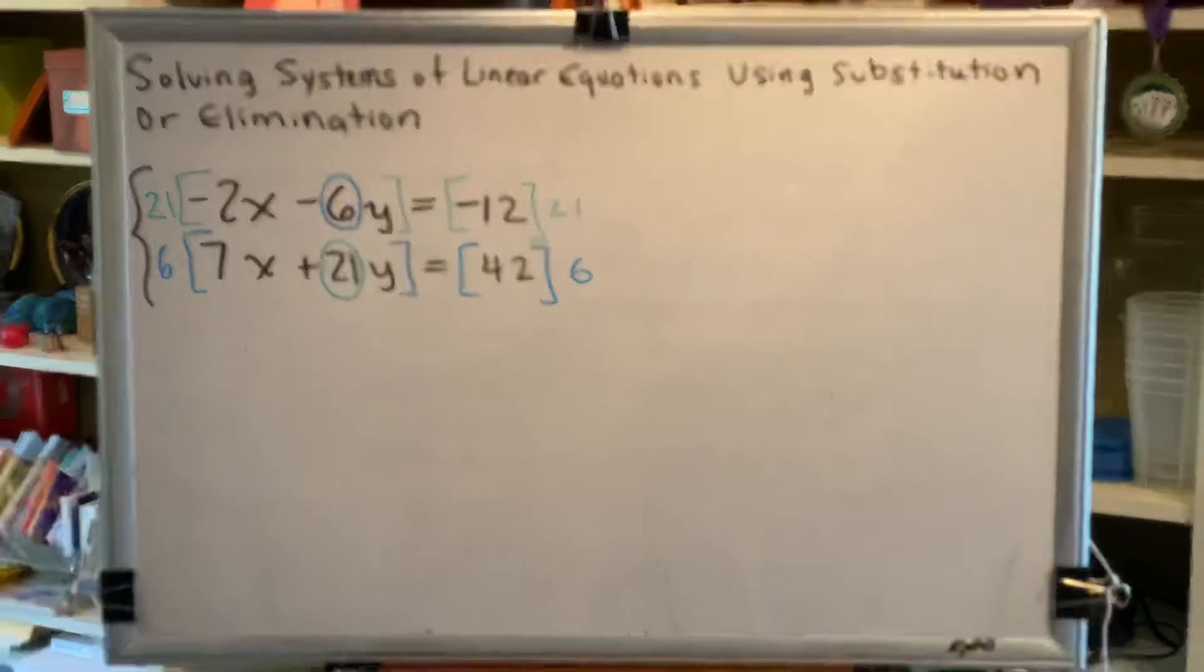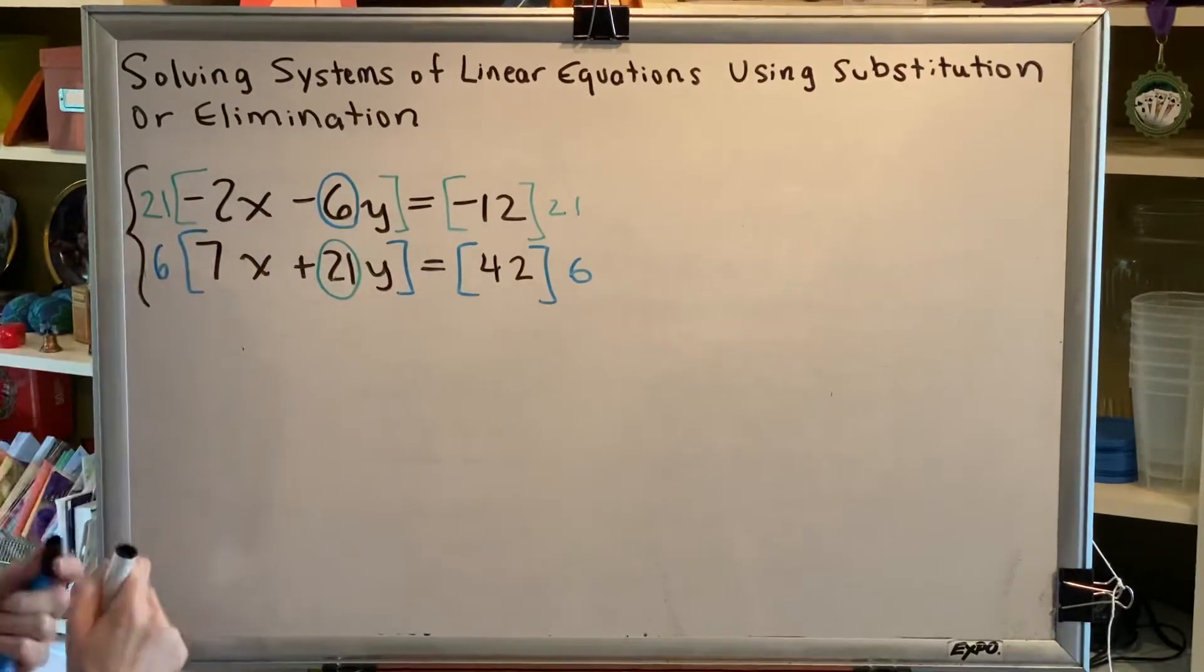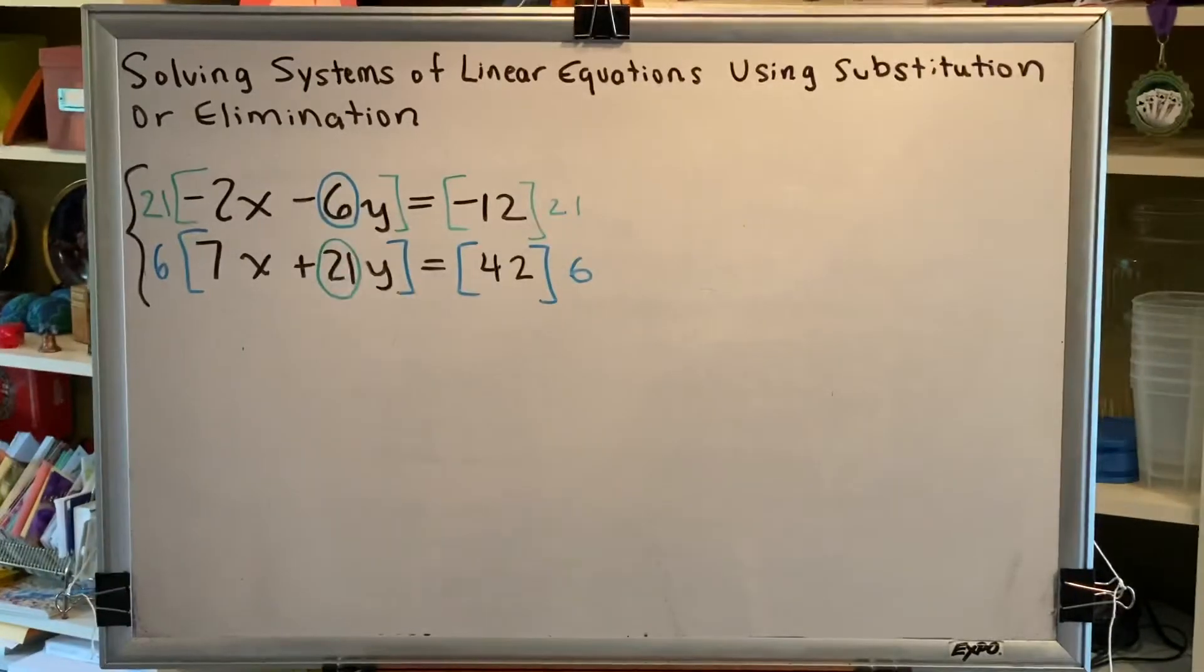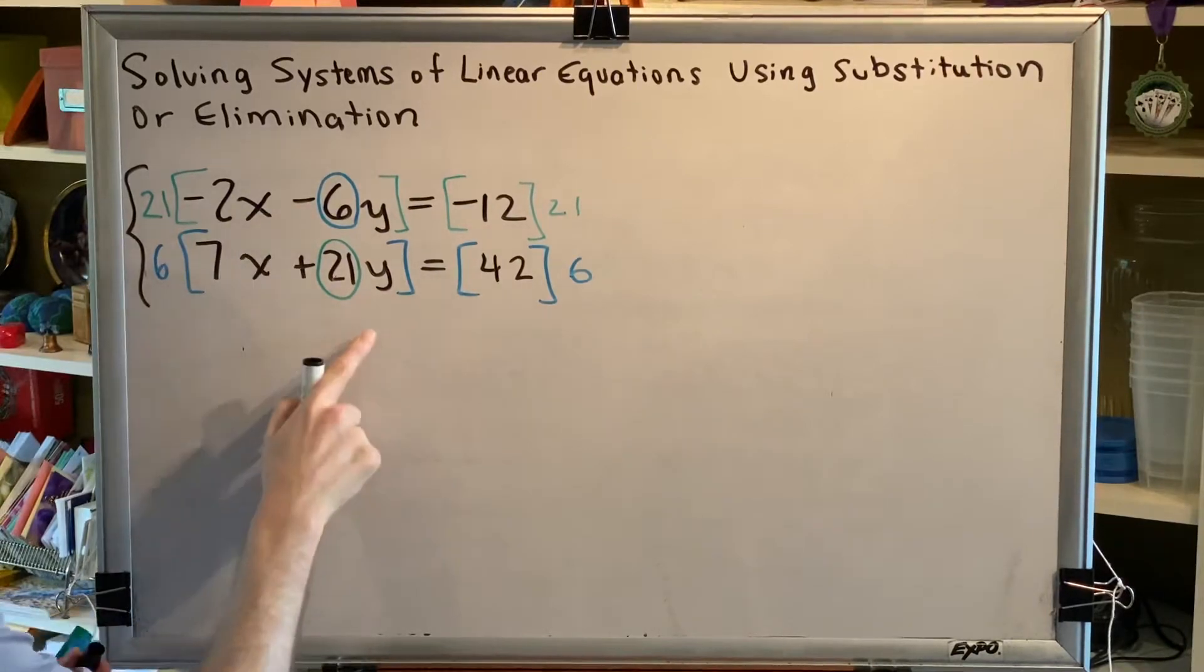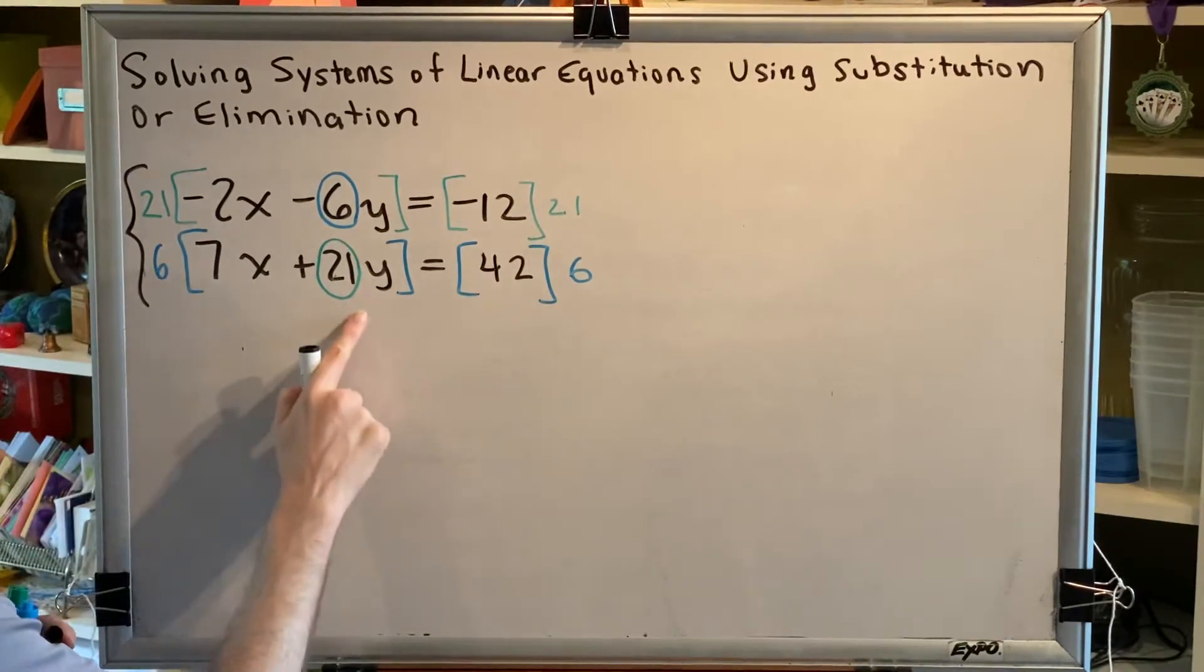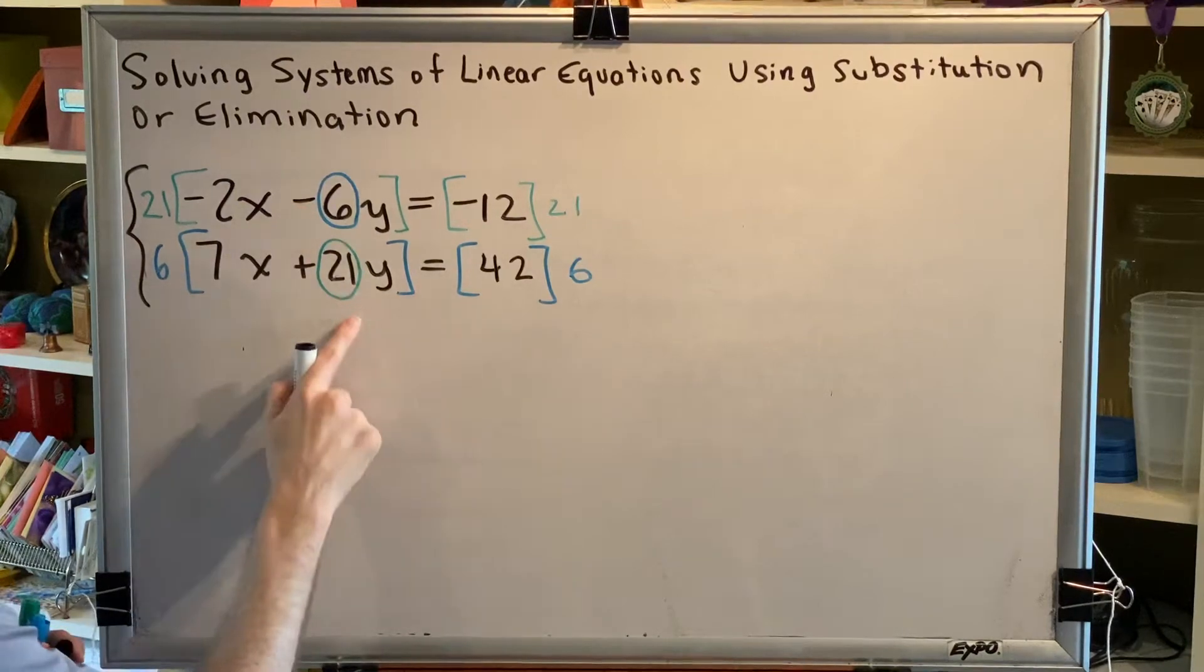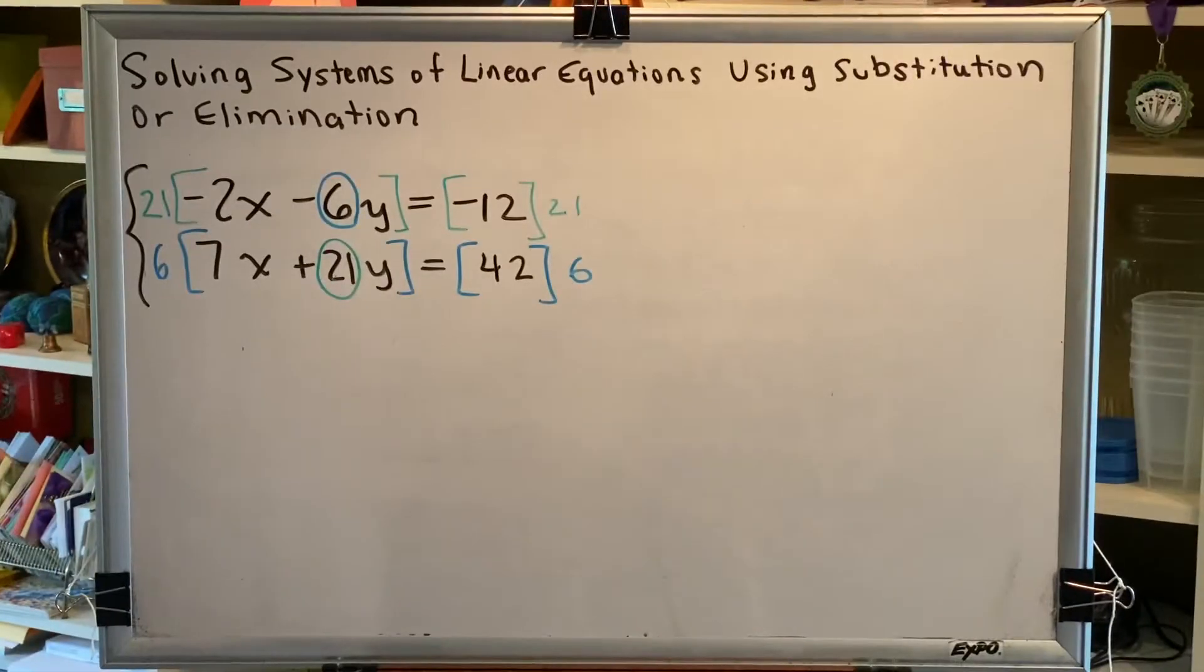Now, what would happen if we did that? We would have to distribute this 21 to this negative 6y. 21 times 6 is 126, so we would get negative 126y. Similarly, when we distribute this 6 here, 6 times 21 is also 126, so we would get positive 126y. Negative 126y, positive 126y. Those are opposites. That will achieve the goal.